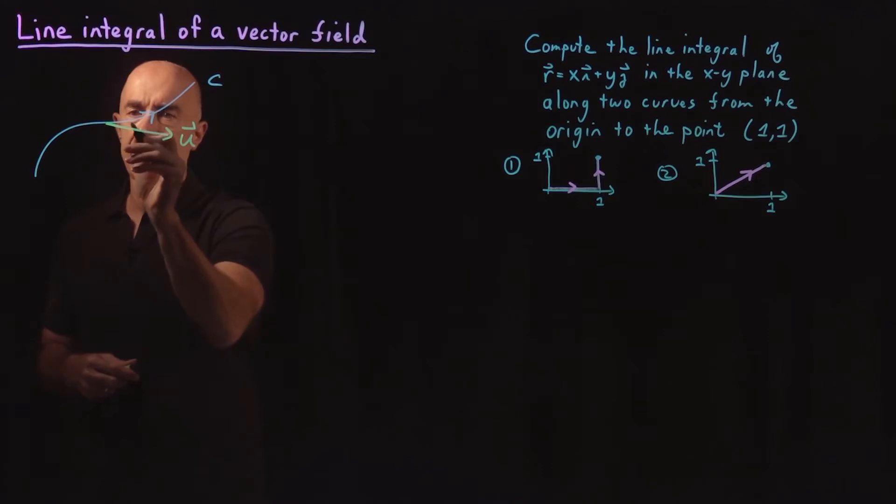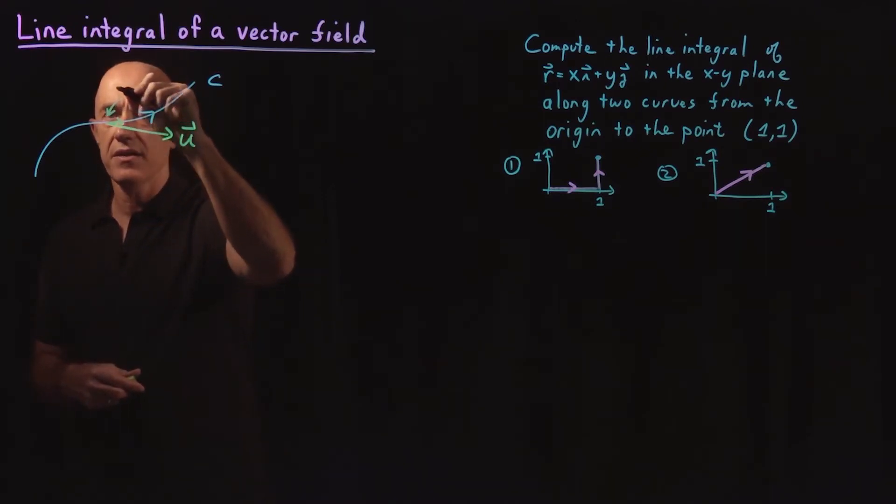And at the same time, we have an element of the curve pointing along the direction of the curve always. And this element here, we're going to call DR.